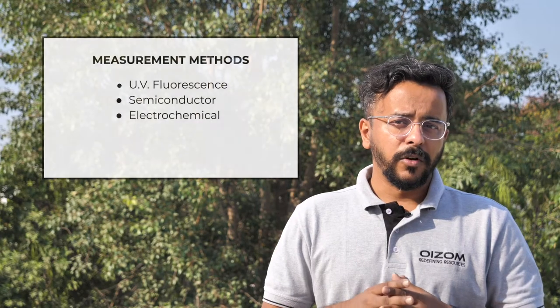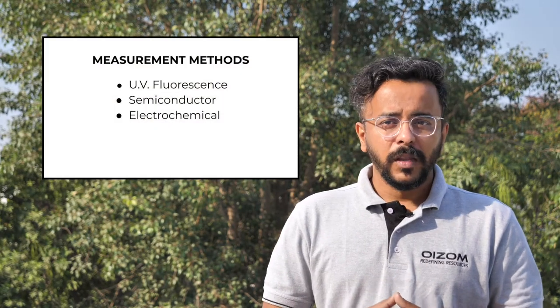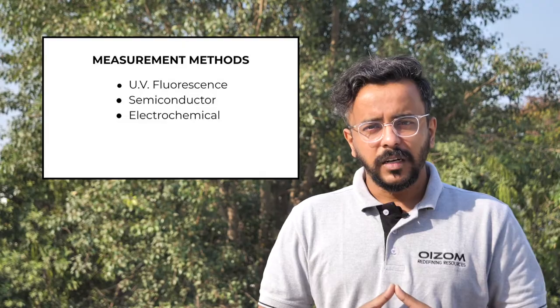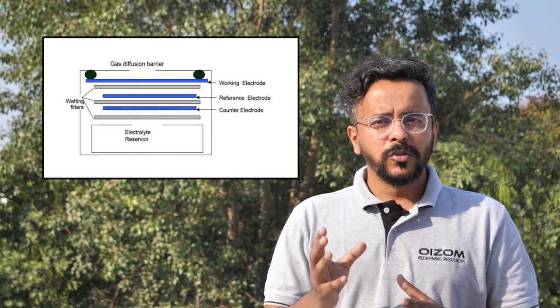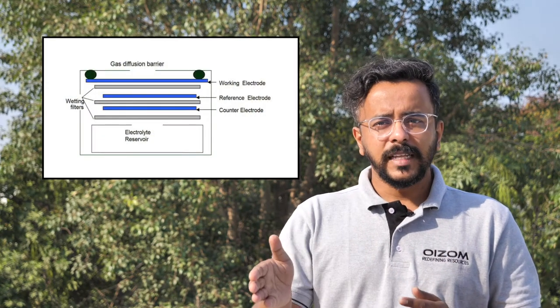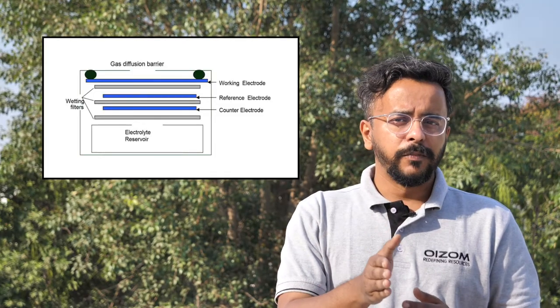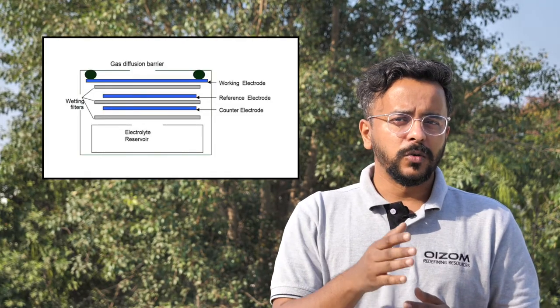Different working principles for sulfur oxide monitoring in the ambient environment are UV fluorescence, semiconductors, and electrochemistry. Oizom measures sulfur dioxide on the principle of electrochemical sensing. It operates based on diffusion of SO2 molecules into the sensor, which results in the production of an electrical signal proportional to the SO2 concentration.